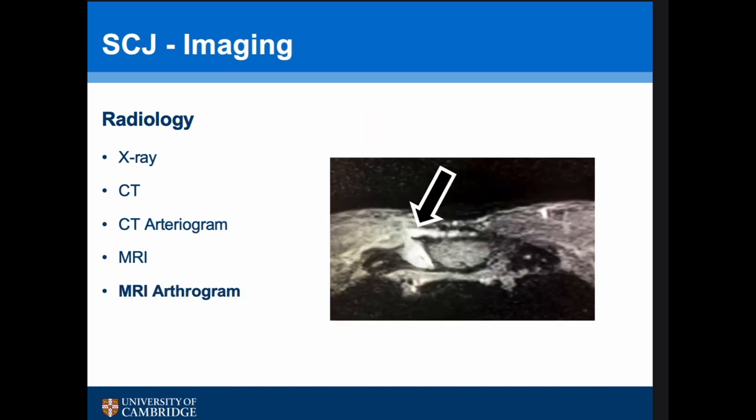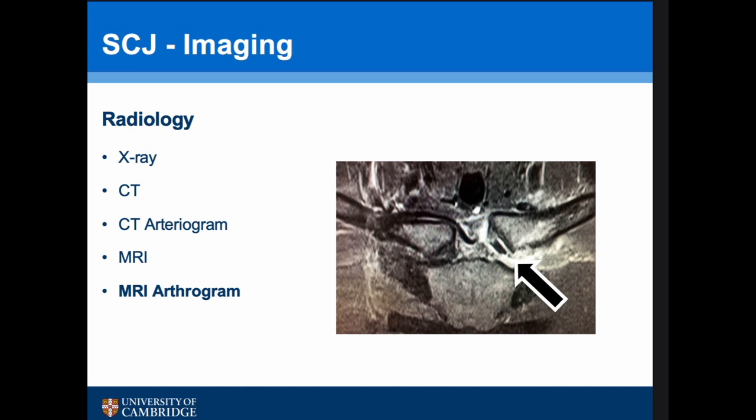Disc pathology and instability around the sternoclavicular joint relate to the soft tissues, so MRI scans and MR arthrograms are really what we're moving towards. This arthrogram shows an anterior capsular injury from an anterior dislocation, and this other scan shows a disc tear.